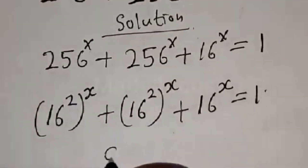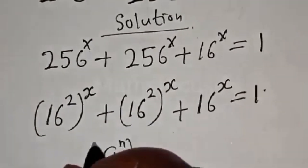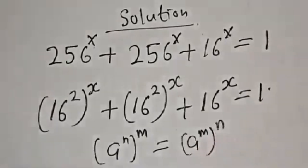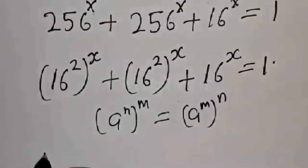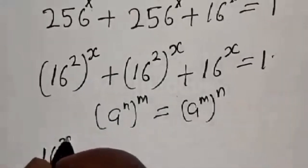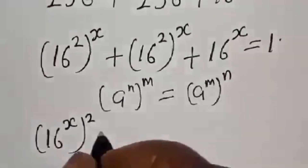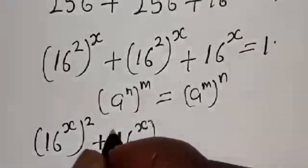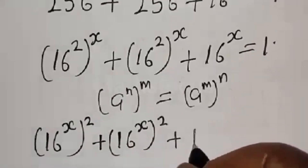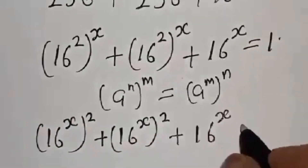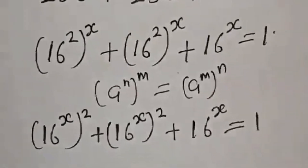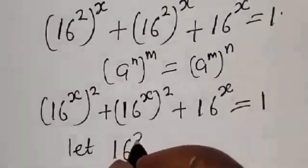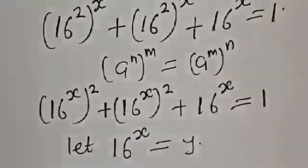Now 256 is the same thing as 16 squared. Remember: if you have a raised to power n raised to power m, it is the same thing as a raised to power m times n. So we have 16 raised to power 2s plus 16 raised to power 2s plus 16 raised to power s is equal to 1.